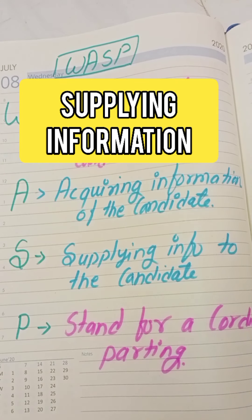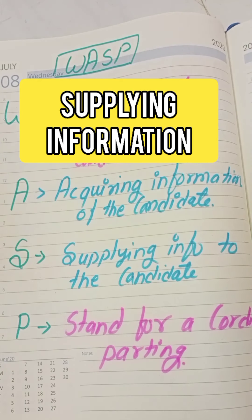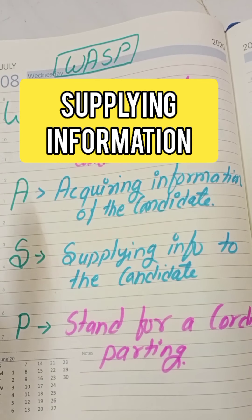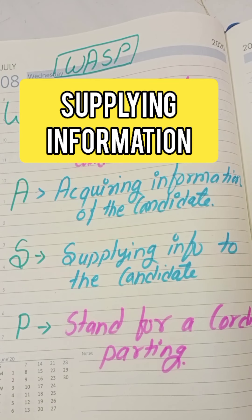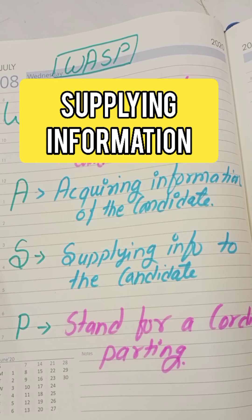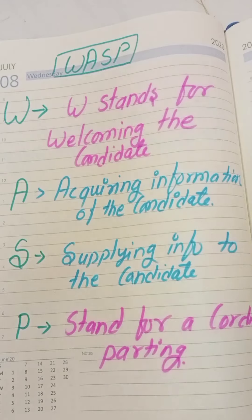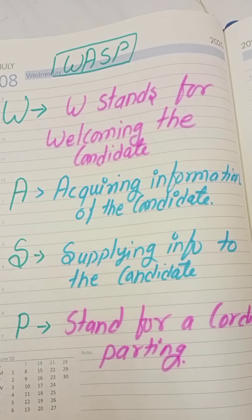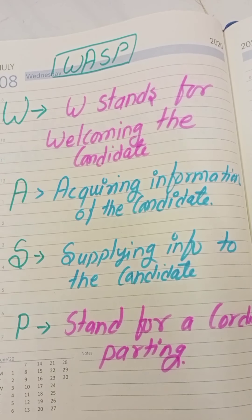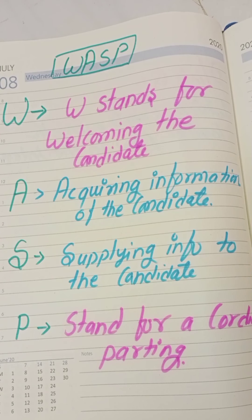The S stands for Supplying information. If you feel that the candidate is suitable and you could offer them the job, give them all the details about the job and about your company. Supply all the information by talking briefly about the history and objectives of the organization — both the job description and job specification. Both sides are required when supplying information.